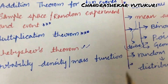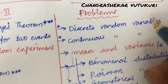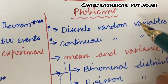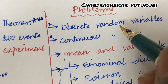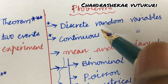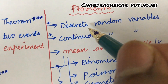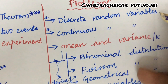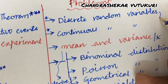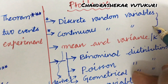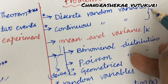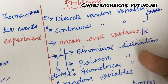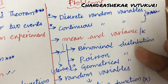Now I am going to let you know the different ways of asking the problems. They will be asking problems on discrete random variables or continuous random variables. Based on these two concepts, you are going to get one question for sure, dear students.